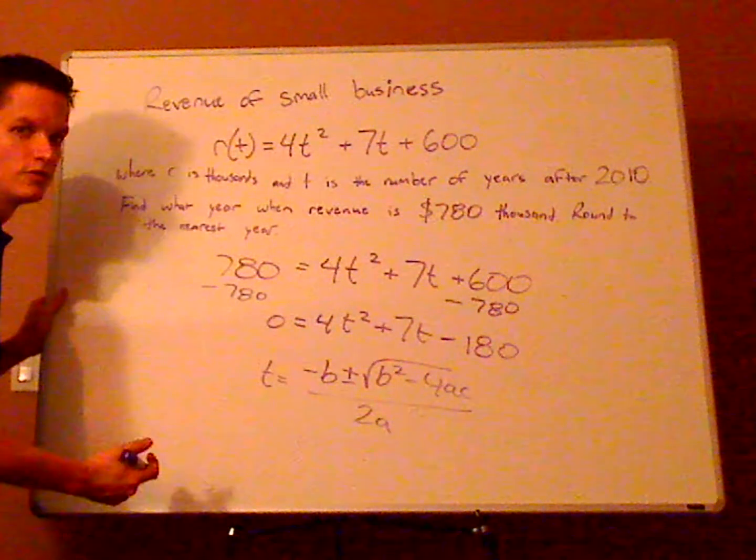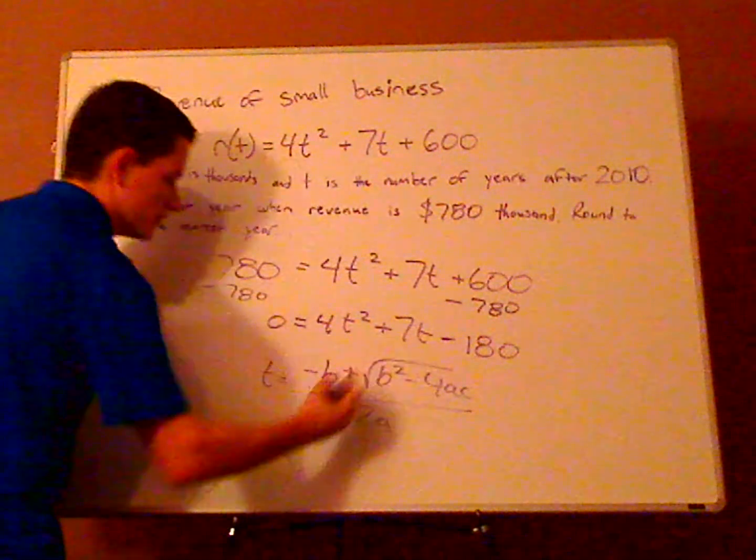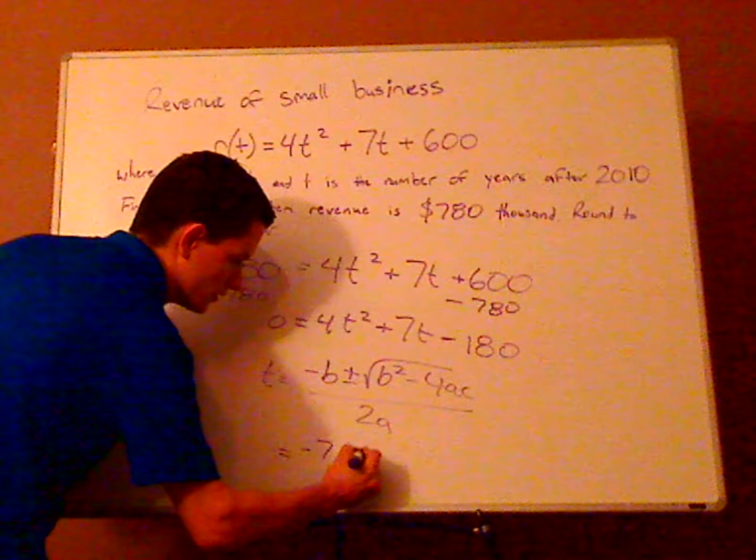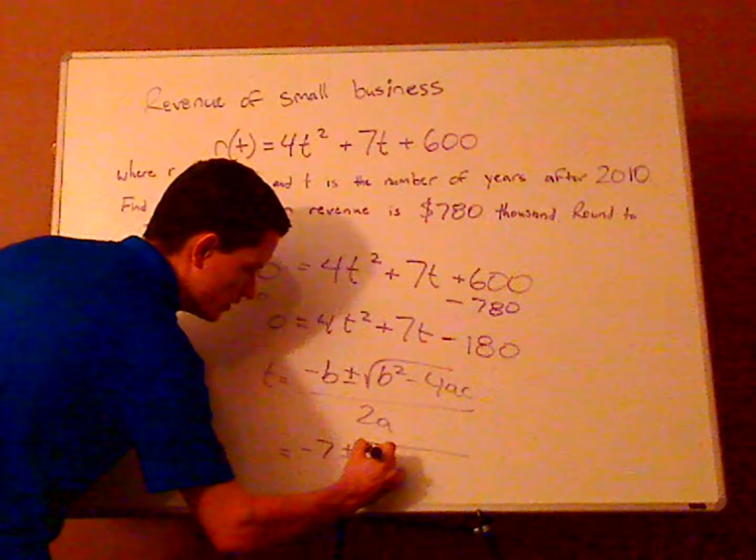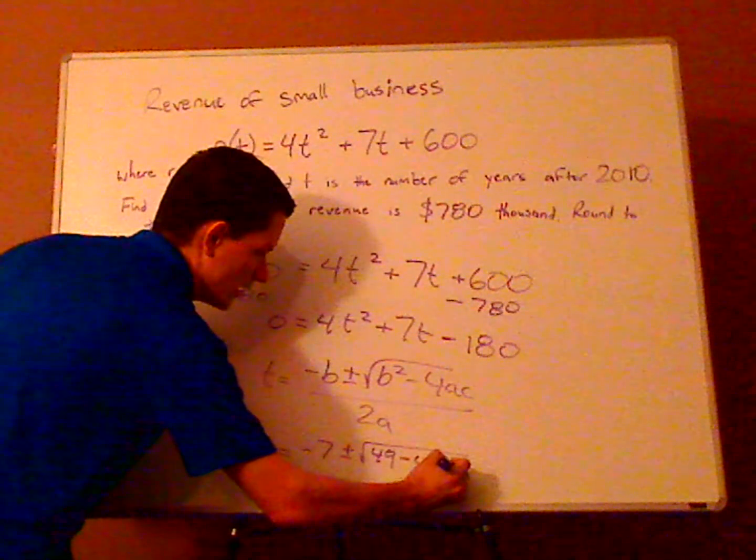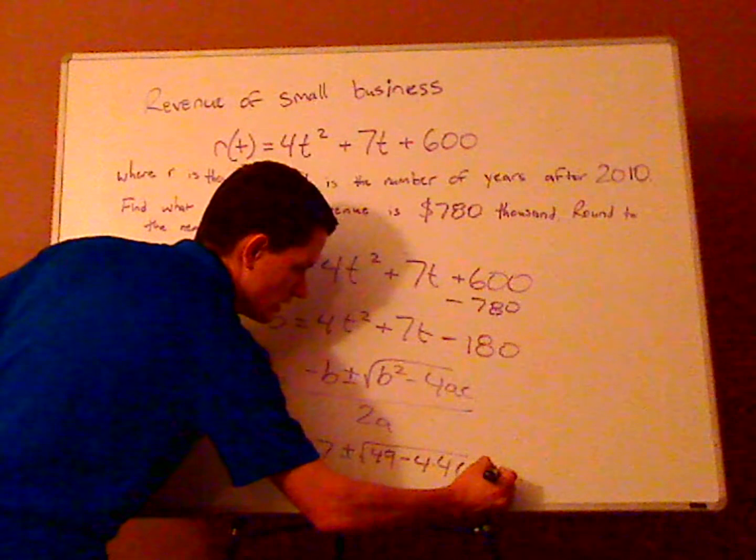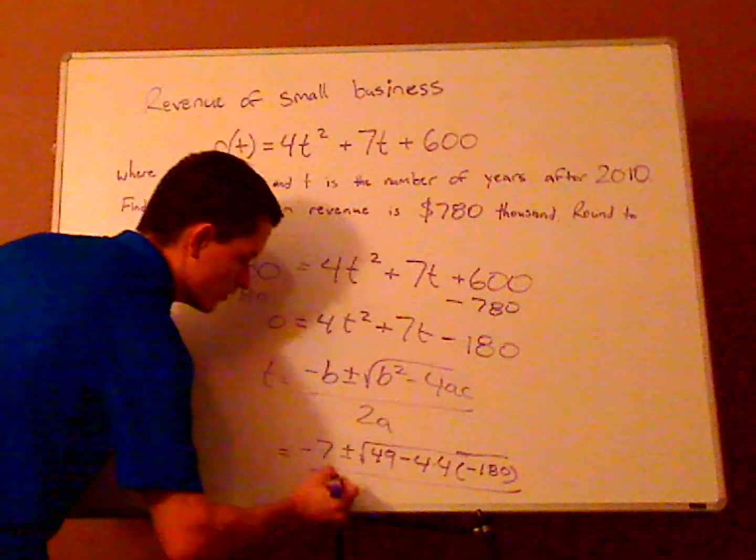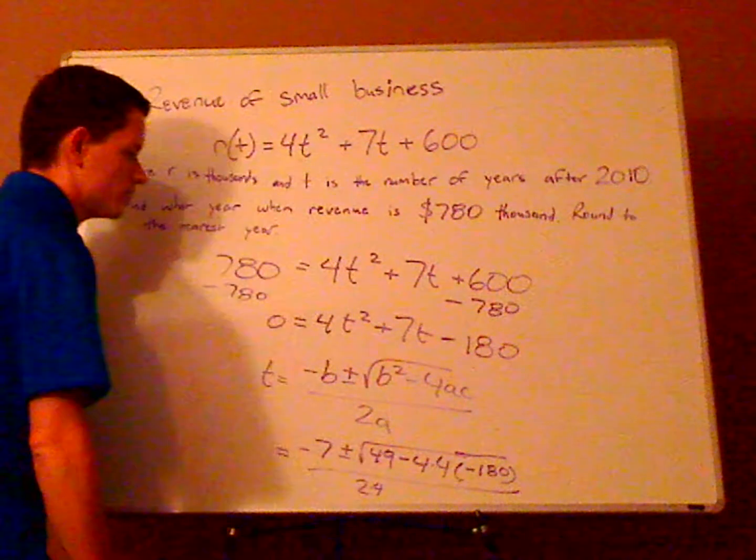So just do a little substitution. Your b is 7, so that would be negative 7, plus or minus the square root. So b² is 49, minus 4 times 4, and your c is -180, all over 2 times 4, which is 8.